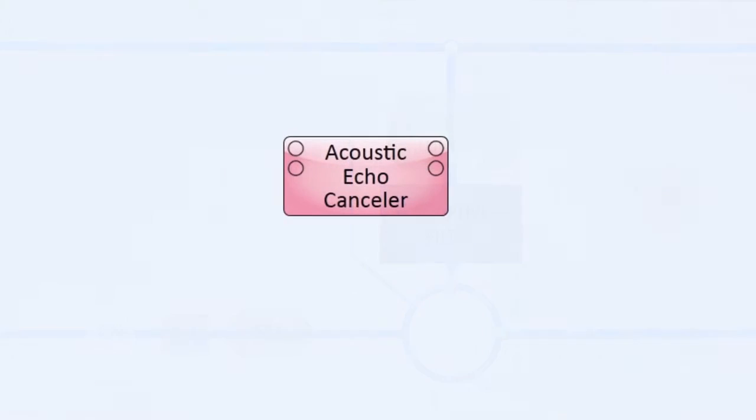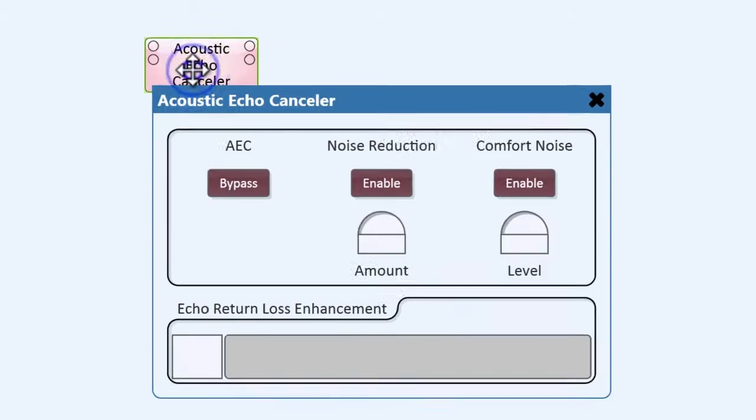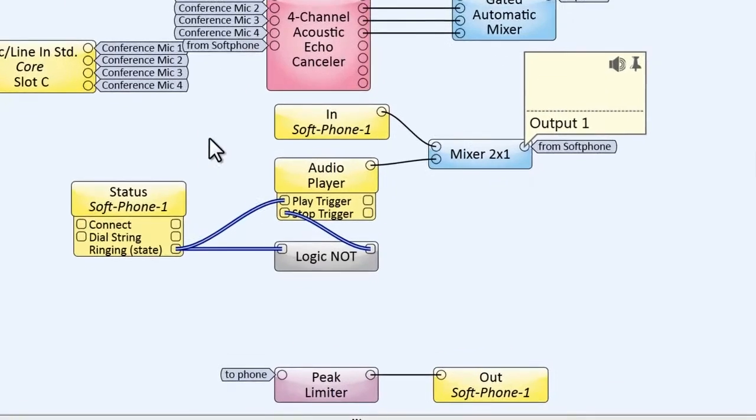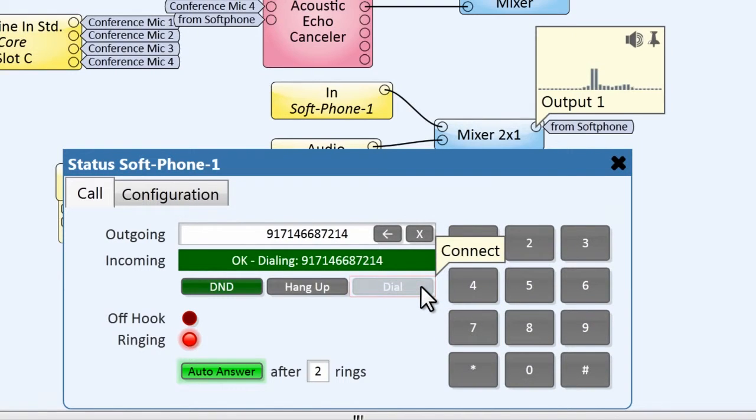All of these subsystems have been combined into a single acoustic echo canceler component. Very little adjustment is necessary to make this work in your conference room. And when you combine the AEC component with the Q-SYS soft phone component and your company's voice over IP server, you can turn Q-SYS into a fully functional teleconference solution.